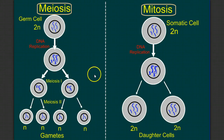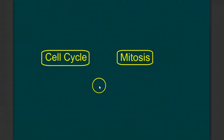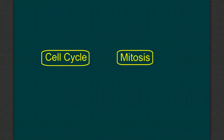That does it for meiosis. Go back through, go slowly, pause, back it up, and draw your own pictures so you have good pictures to look at when you study. Make sure you can detail what happens at each step, and also be able to recognize different pictures and identify which stage of mitosis or meiosis they represent. Make sure to go back and review the cell cycle and mitosis videos posted earlier. See you next time!